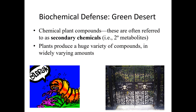Finally, plants have all sorts of chemical defenses. The world may be green, but it's not really food — it's like a green desert. These chemical plant compounds are often referred to as secondary chemicals because they're not part of the plant's primary chemistry, which is the chemistry involved in photosynthesis. The world may be green, but it's not all edible. There are lots of chemicals that deter, poison, or otherwise disrupt herbivores in the herbivory process.